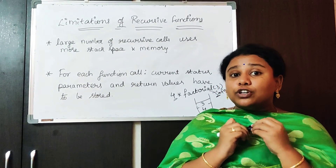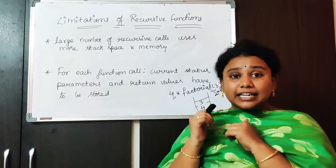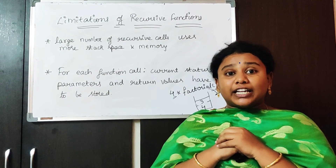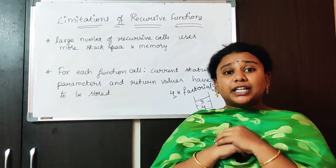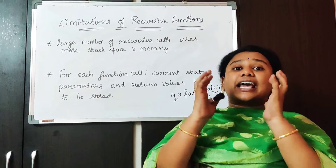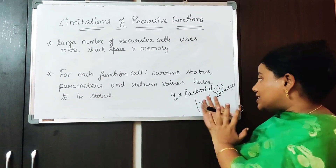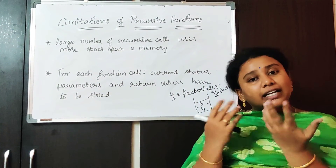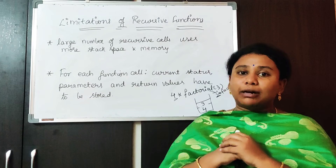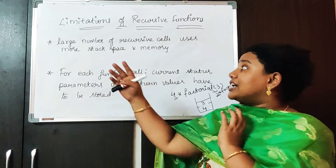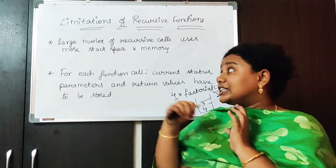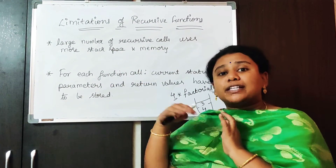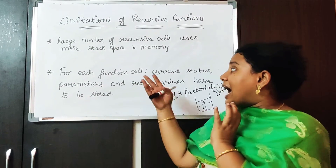Now if it is a factorial of 4, this is the case. But if you would like to calculate the factorial of 9 or any other bigger number, what happens? It includes more stack space. So it will take lots of stack space and eventually memory also. That's why when a large number of recursive calls are there, we have more stack space and more memory gets wasted.